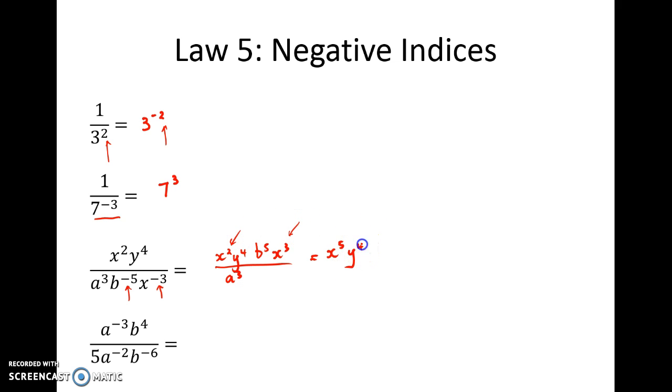Because the bases aren't the same for the y or the b I'll just have to leave them as separate terms. So we've now simplified our original expression firstly by removing the negative indices and secondly by consolidating the x terms.